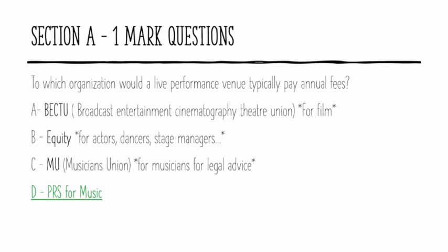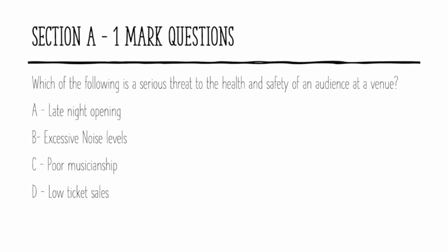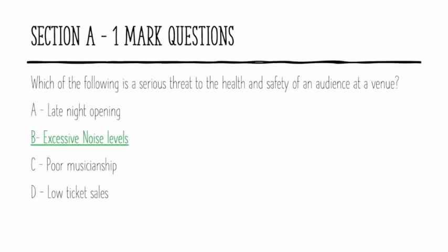We'll now move on to the next question. This is another tick box question and it's also worth one mark. The question is: which of the following is a serious threat to the health and safety of an audience at a venue? Pause the video and answer this, then I'll have the answer for you. The answer is B — excessive noise levels.